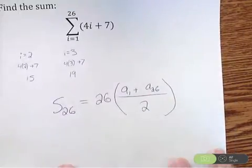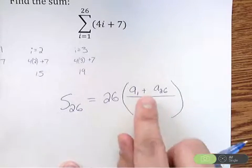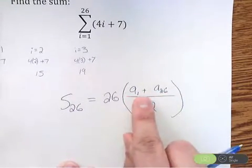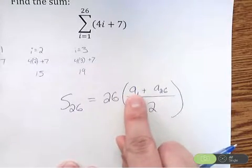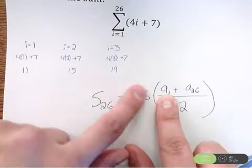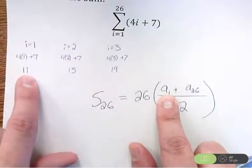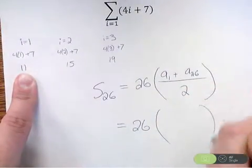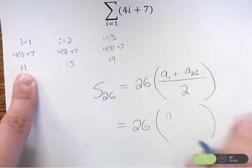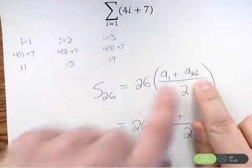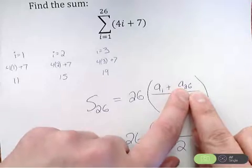Now before I can simplify this formula, I've got to clean up a few things here. I want to know what a1 is. I want to know what a26 is. I want to know the real numbers. So a1 is what is the first term? Well, we just calculated that when we were making sure this was arithmetic. The first term is 11. So we're just going to have 26 times 11 up there.